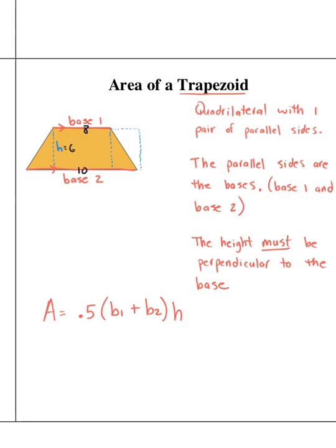So we just plug in. Our area is equal to 0.5. It will always be 0.5 here. Inside parentheses, we put the two bases. So we put in 8 and 10, 8 plus 10, and out here is always the height. So we always put in the height right here, times 6.